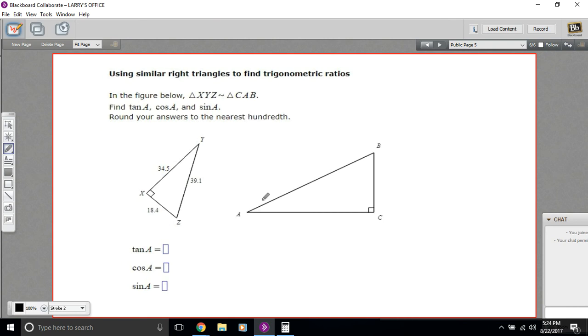In this problem, we're being asked to find the tangent of angle A, the cosine of angle A, and the sine of angle A. But look at this triangle. There's no degree measure in there, no sides to make ratios. So what's going on here?